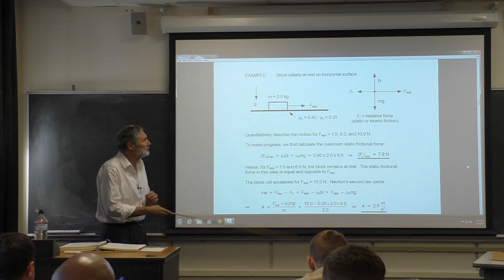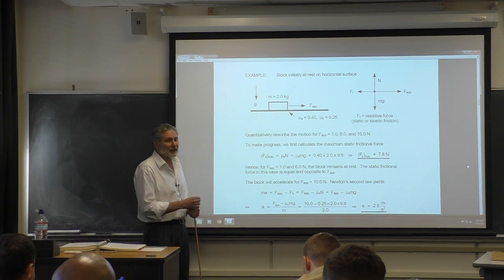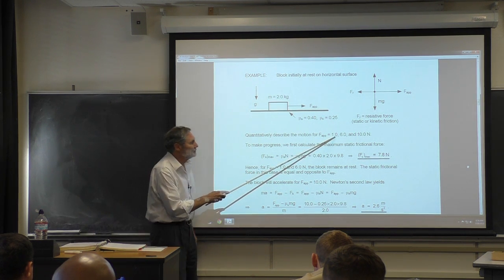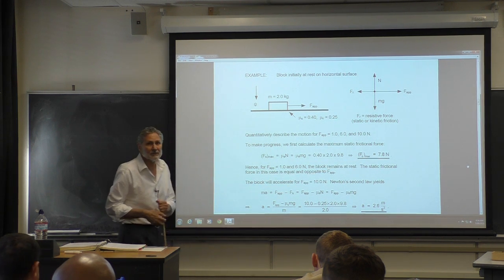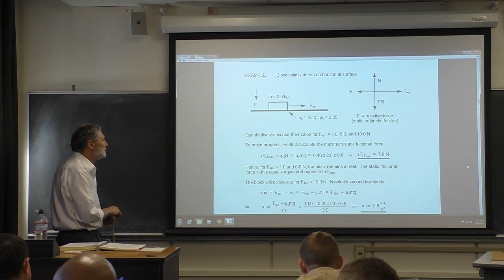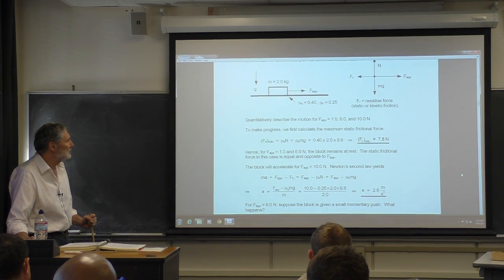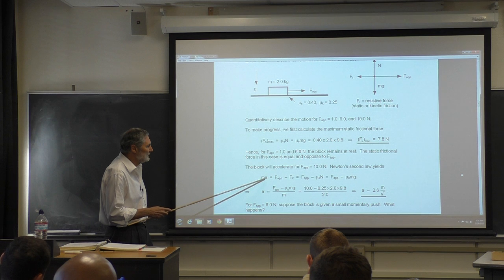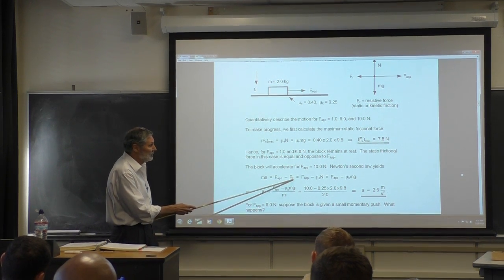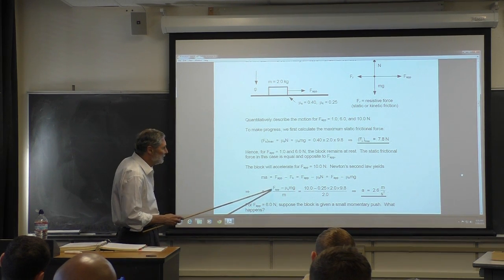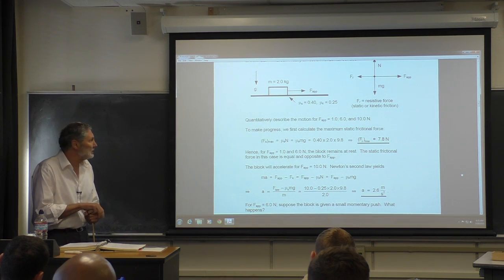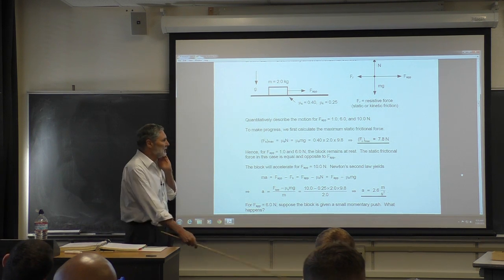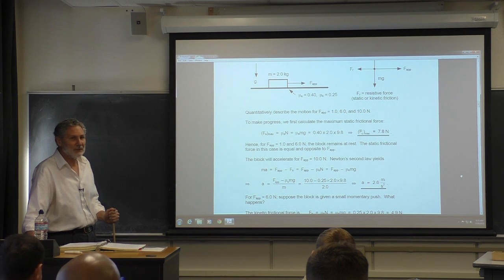If I start from rest and apply one newton carefully — not jerking — it's not going to move. Six newtons? Still not going to move. Ten newtons? It will move, similar to what we saw in the demonstration. Once we've broken the static frictional force with ten newtons, the kinetic frictional force comes into play. The equation of motion is mass times acceleration equals applied force minus kinetic frictional force, giving an acceleration of 2.6 meters per second squared, since the applied force exceeds the kinetic frictional force.